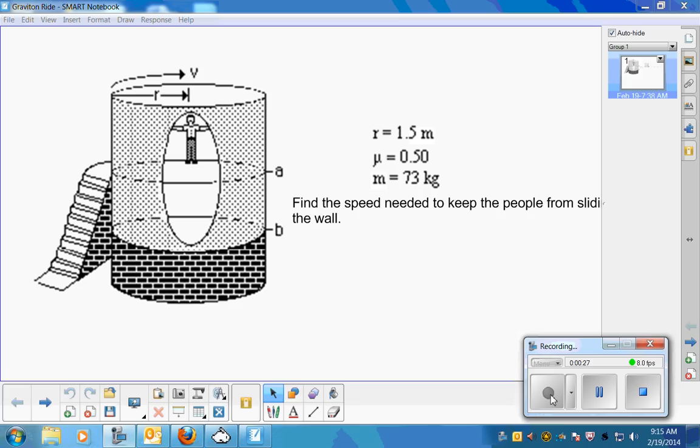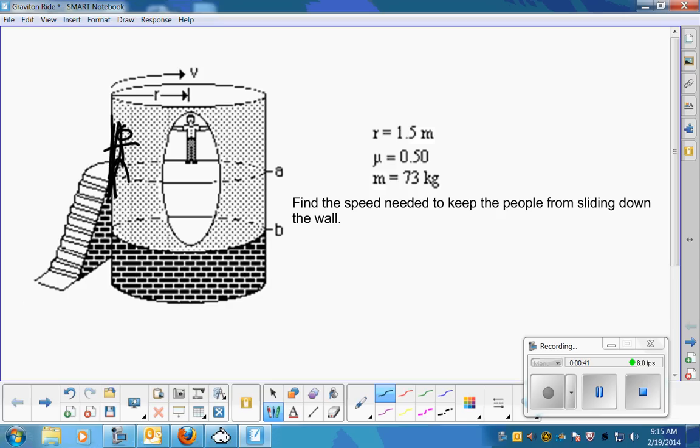It's another centripetal problem. That means we're working with forces. That means you want to draw FBDs. So I'm going to move my little person so they're over here on this side wall and draw the FBD for when they're at that side wall, because the orientation is a little bit easier to draw. So here's that side wall.